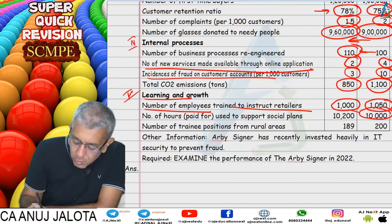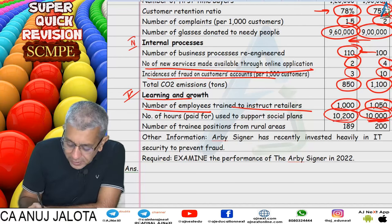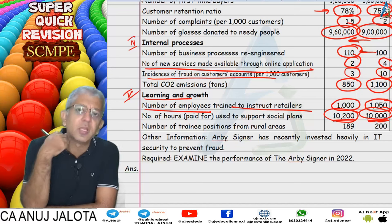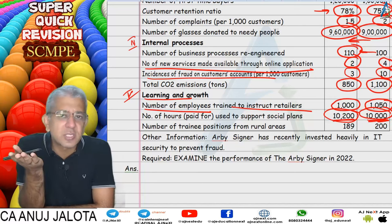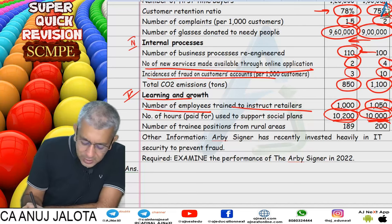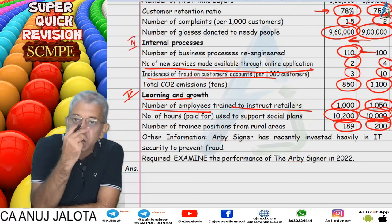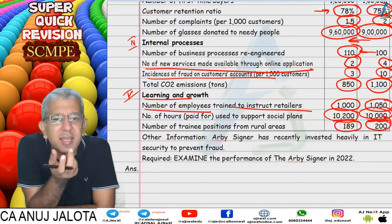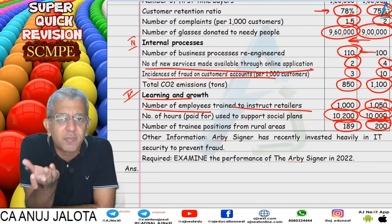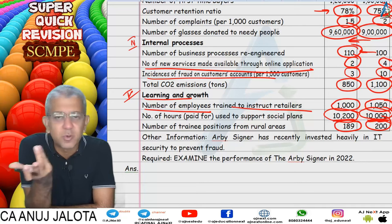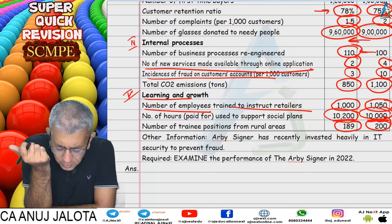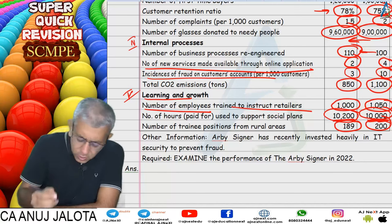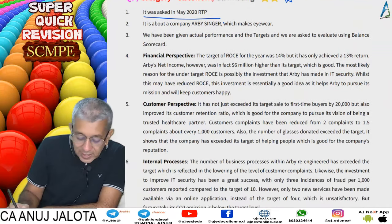This shortfall in employees trained to instruct retailers might affect business since retailers are the people dealing with final customers. Number of hours paid for social plans: target 10,000, achieved 10,200 — you can look at this two ways: more social service done, or increased cost, which could also partly explain the shortfall in ROCE target. Number of trainee positions from rural areas: target 200, achieved 189 — slightly bad, but perhaps not enough good candidates applied from those areas, which may be beyond the company's control.